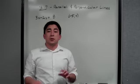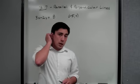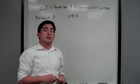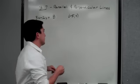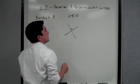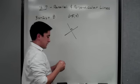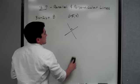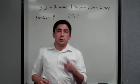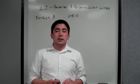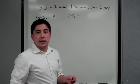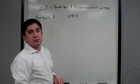For our second example, we're switching from parallel to perpendicular lines. Perpendicular means the lines cross at a 90-degree angle. The way we can tell if two slopes are perpendicular is by using the negative reciprocal — or as I like to say: switch the symbol, flip the fraction.